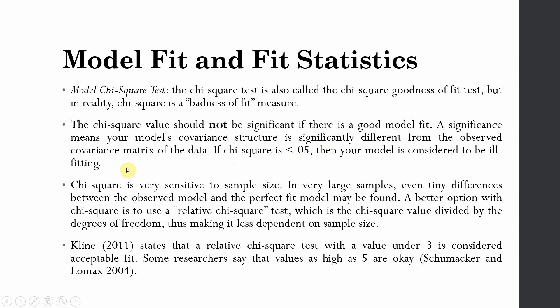However, there is one problem: chi-square is very sensitive to sample size. In large samples, even tiny differences between the observed model and the perfect model fit may be found. A better option with chi-square is to use a relative chi-square, which is the chi-square value divided by the degrees of freedom, thus making it less dependent on sample size.